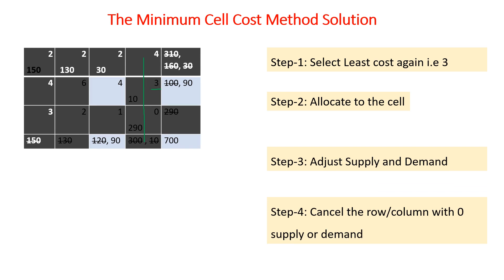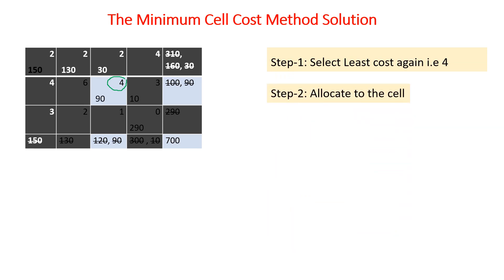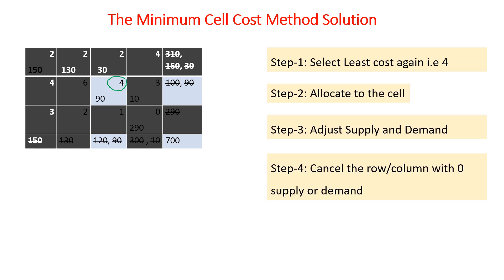In the final step, only cost 4 remains with no other option. Both supply and demand are 90, so we assign 90 and cancel both sides since they are fully assigned. We shade either the column or the row to complete the allocation.